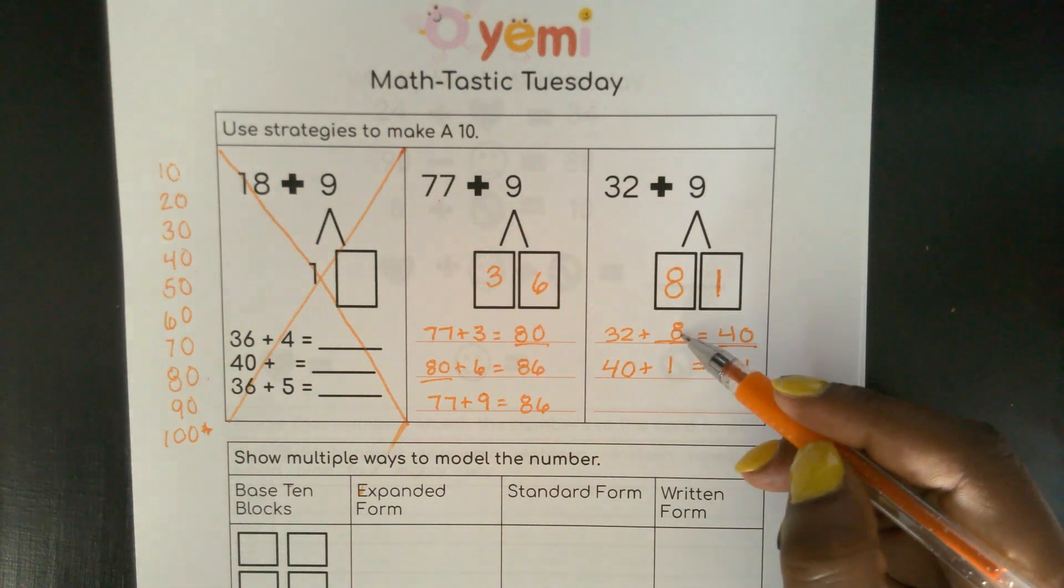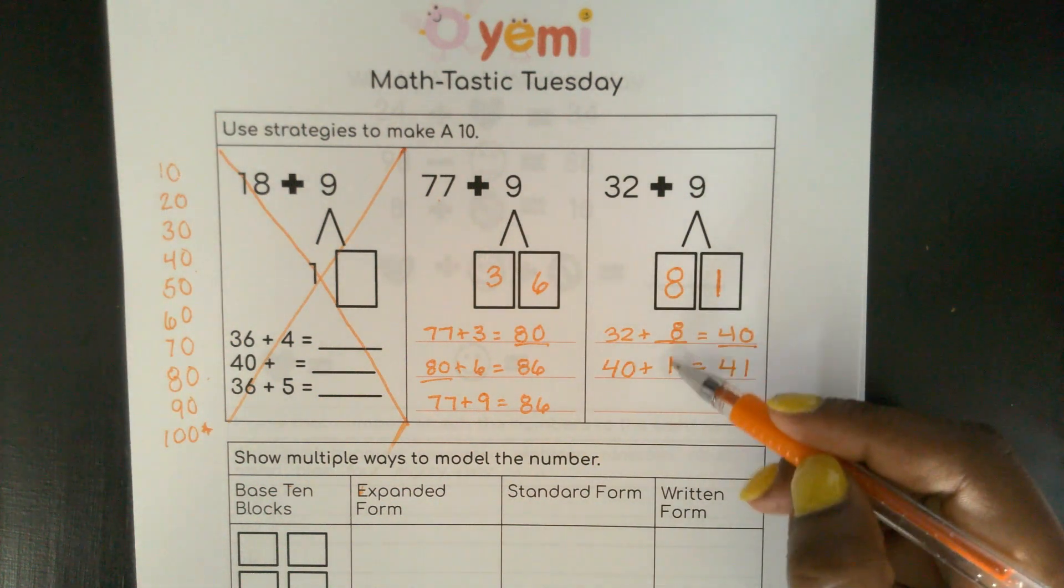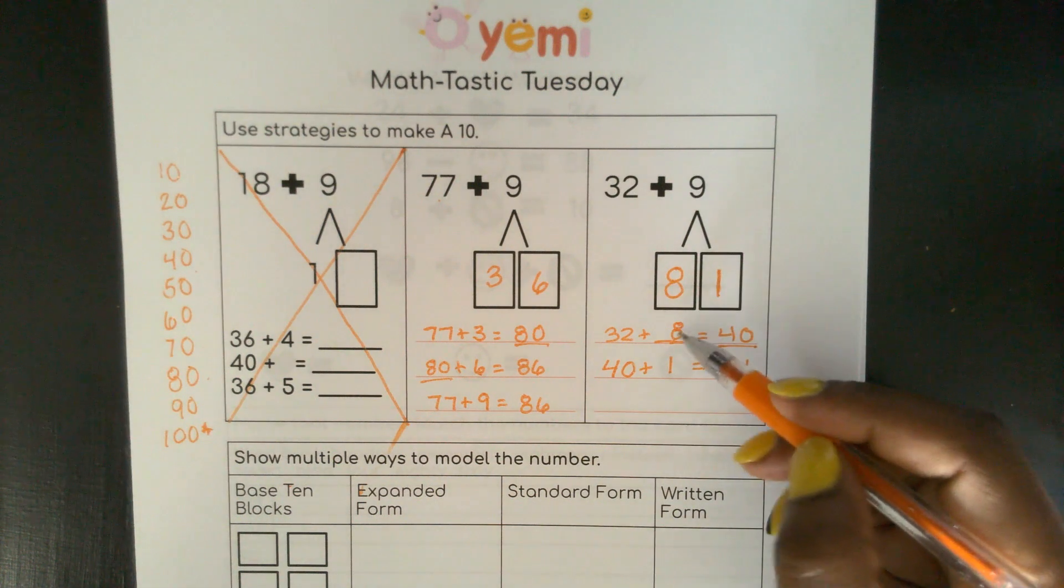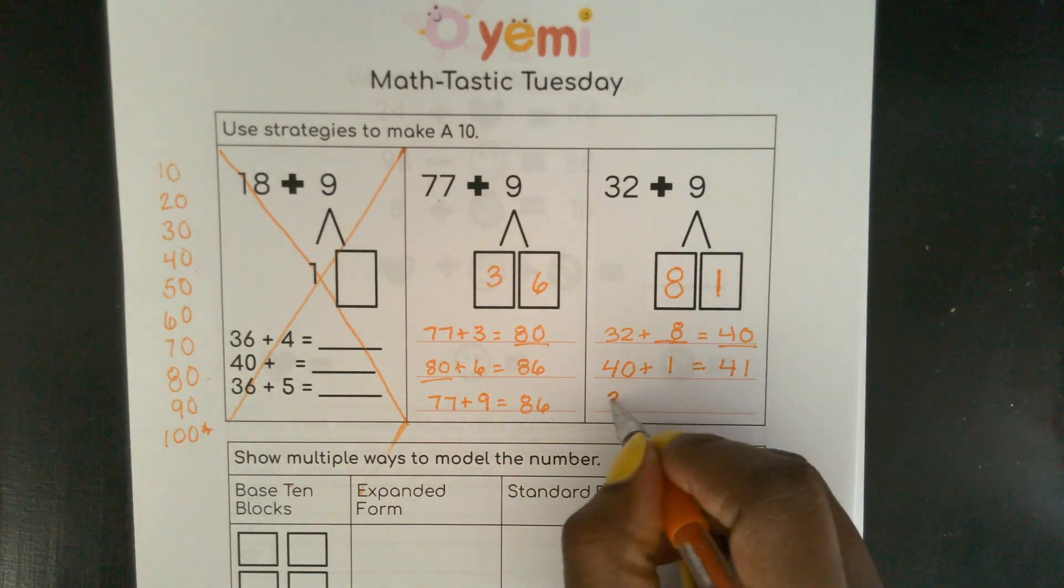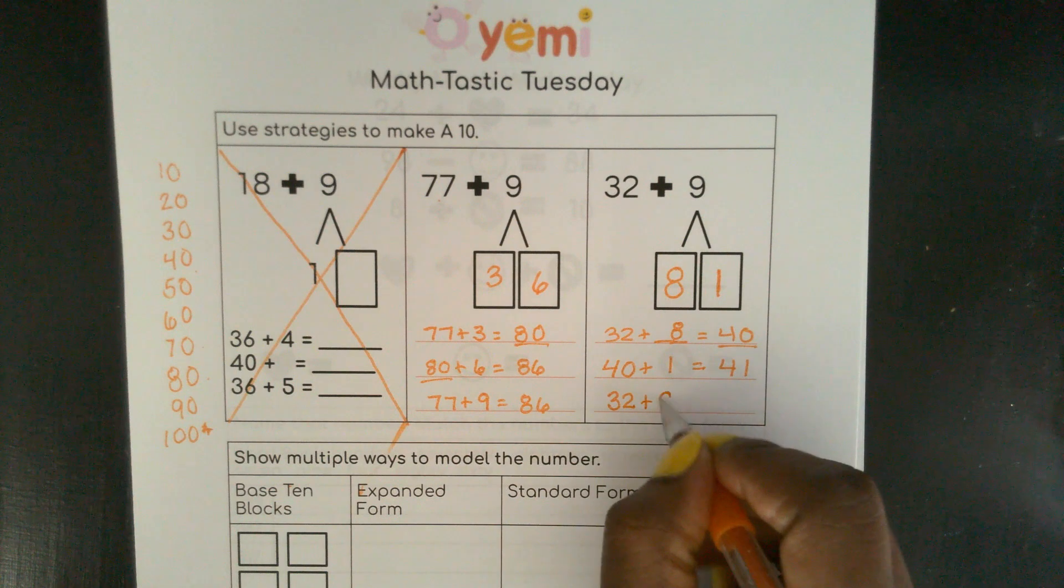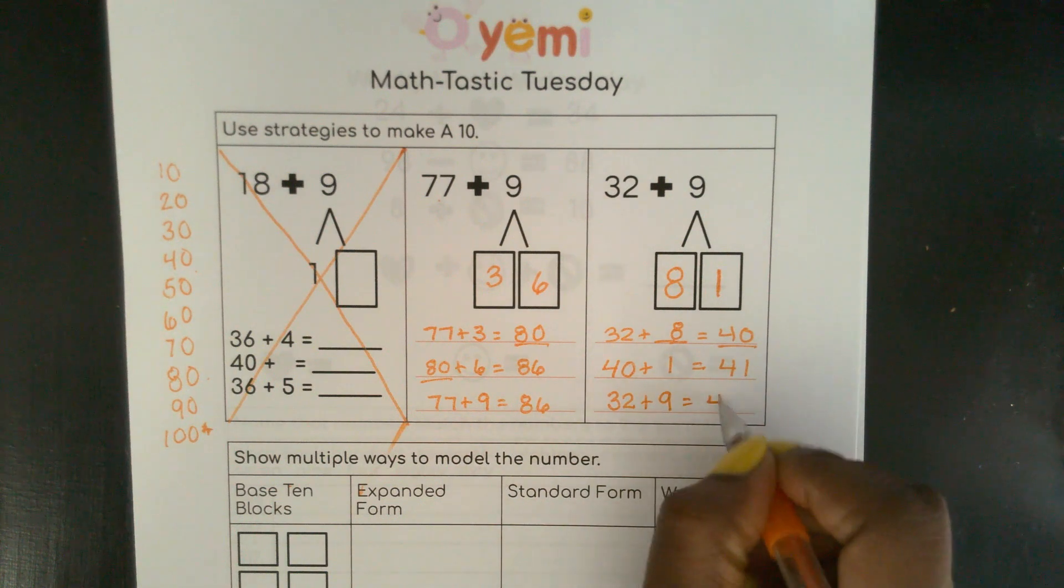Remember here how 6 plus 3 equals 9? Well, now here, 8 plus 1 equals 9. That's how we know we're on the right track. So 32 plus 9 equals 41.